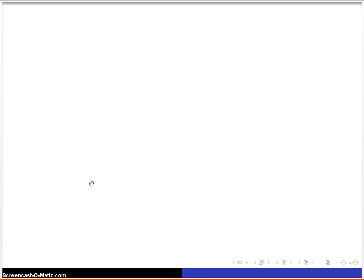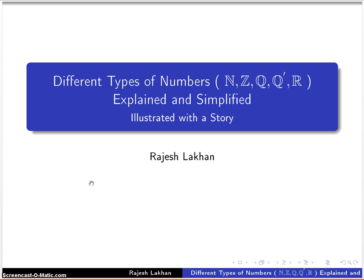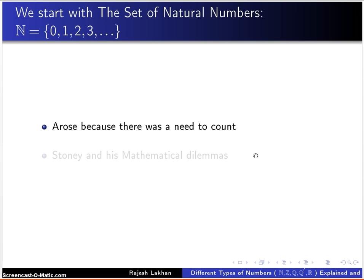We're going to explain the different types of numbers: natural numbers, the integers, rational numbers, irrational numbers, and real numbers. We're going to take it very simple and simplified. We'll use a story to help us. By the way, my name is Rajesh Lakhani. Let's get into it.